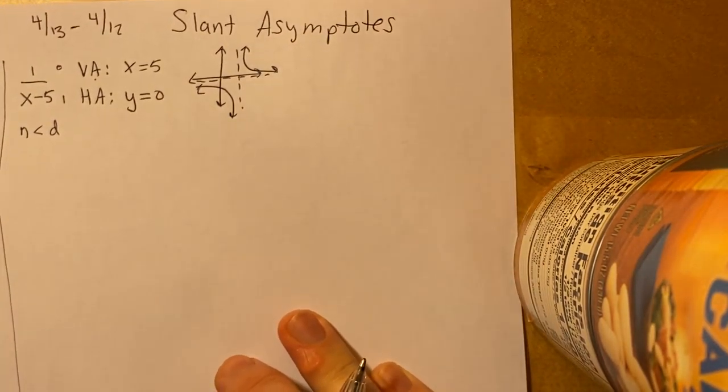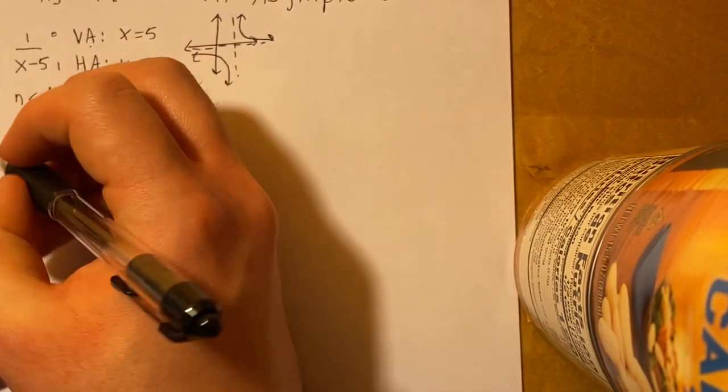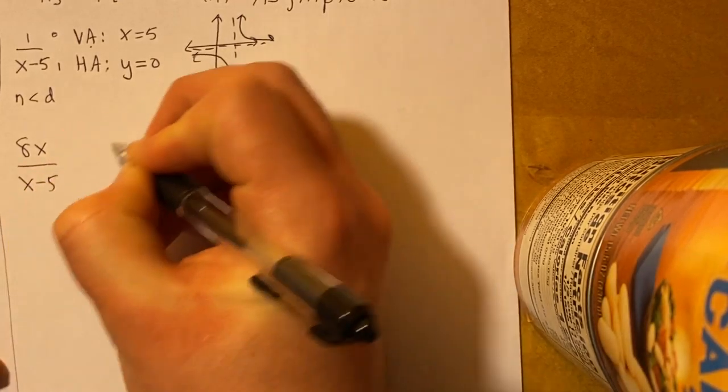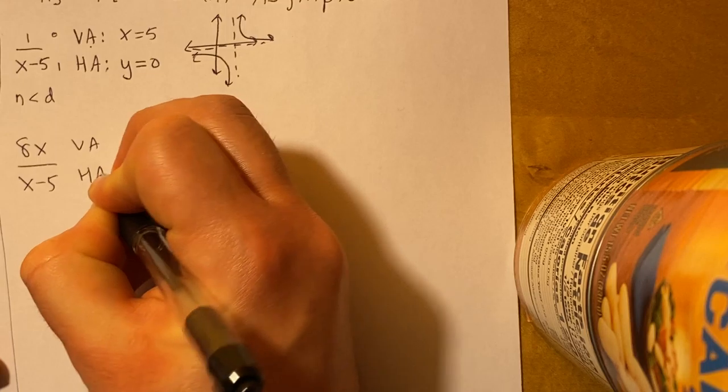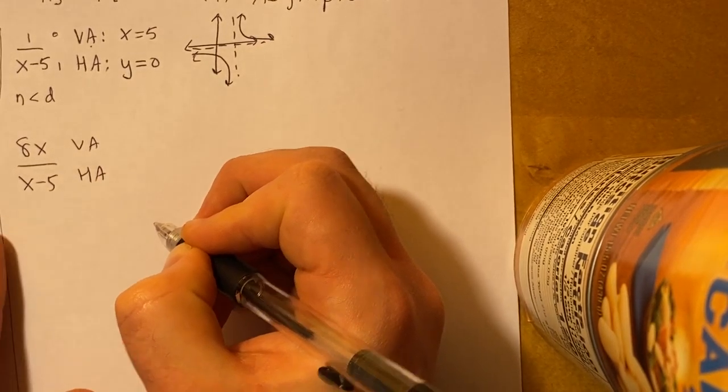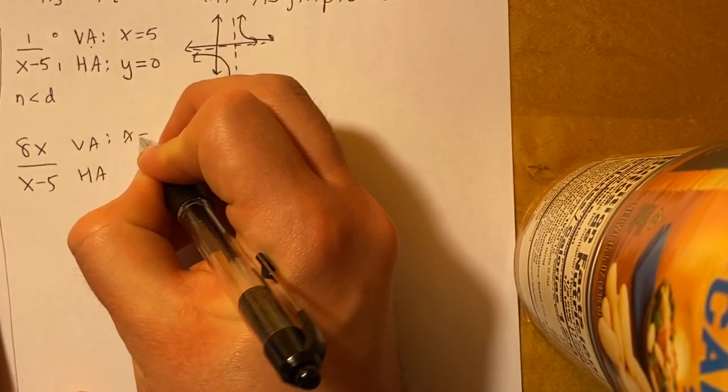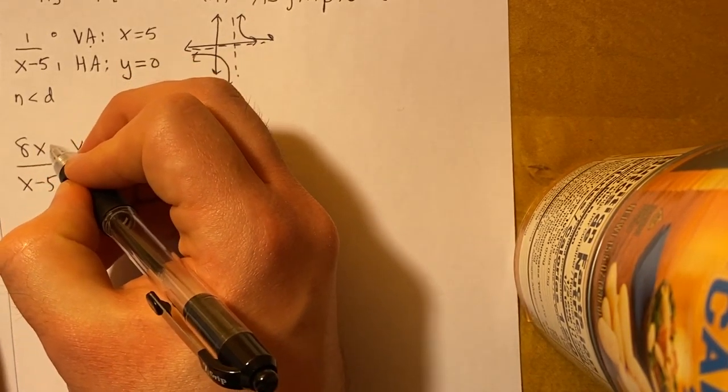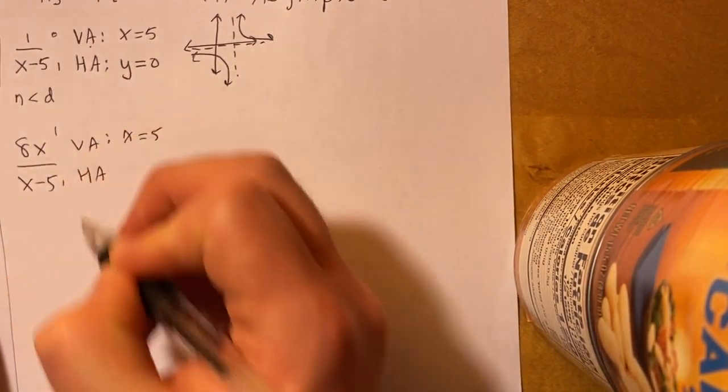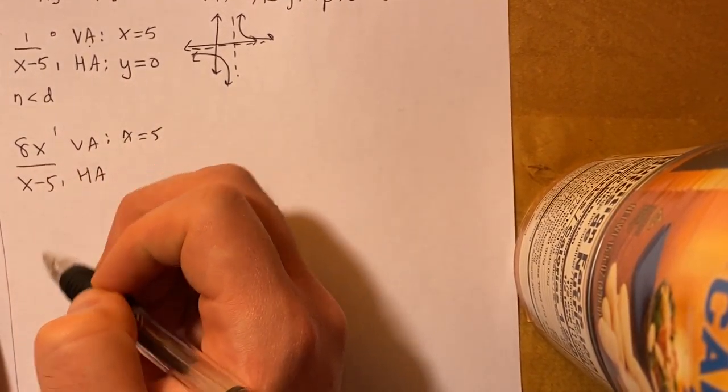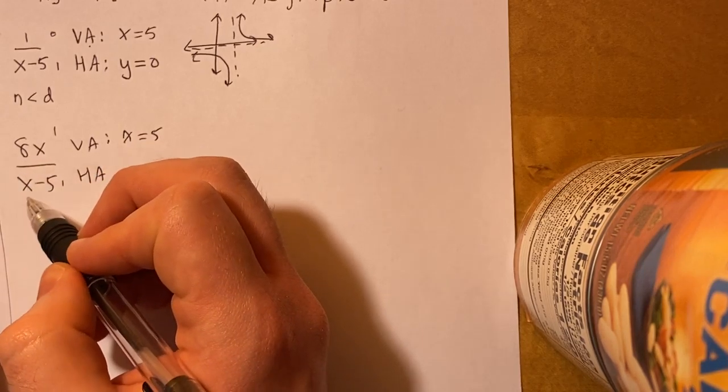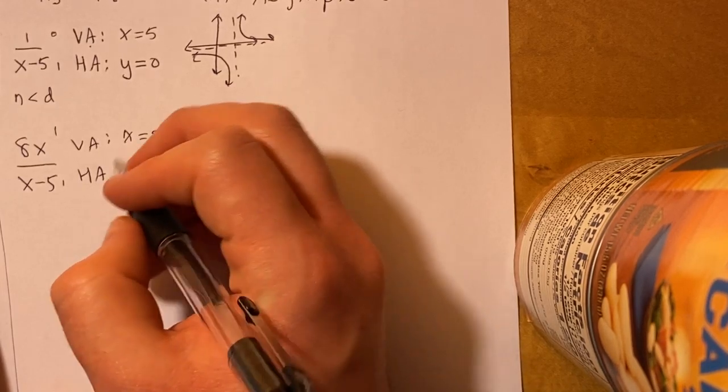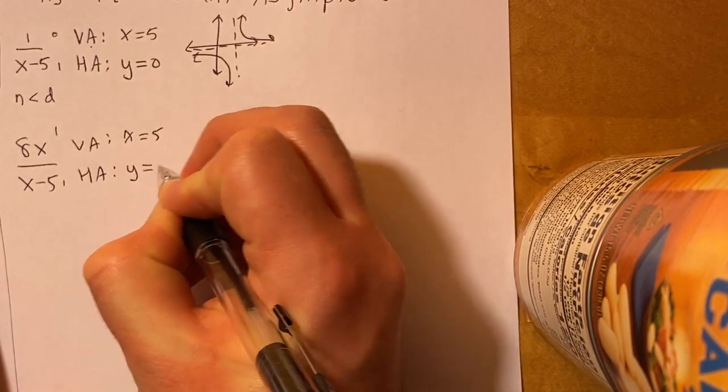Okay, we go on to the next situation, where say now we have 8x over x minus 5. We're looking for a vertical asymptote and a horizontal asymptote. Well, our vertical asymptote is the same, x equals 5. But now for the horizontal asymptote, I know the degree of the numerator is 1, and the degree of the denominator is also 1. So we compare the leading coefficients. The leading coefficient here is 8, the leading coefficient here is 1. 8 over 1 is just 8, so our horizontal asymptote is y equals 8.